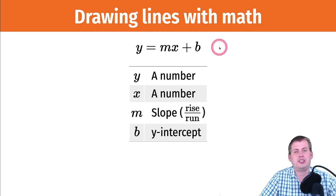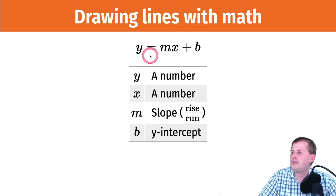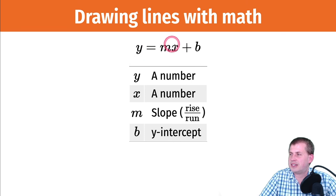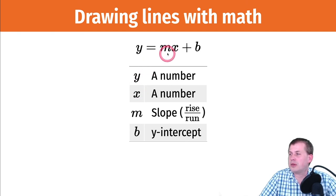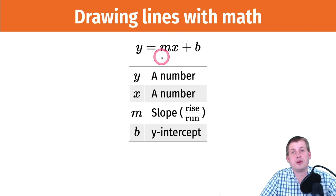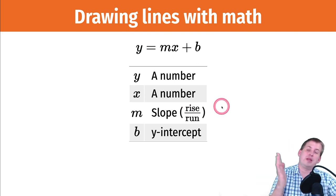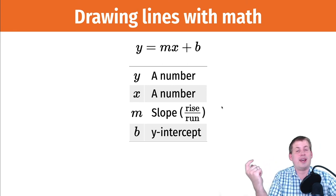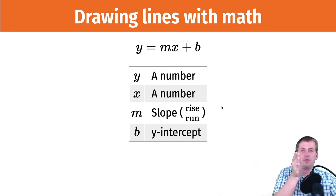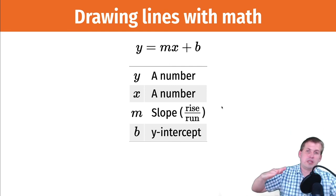In the y = mx + b formula, each letter stands for something. Y represents some number, x represents some number, but what's really important is m and b. The m is the slope of the line, which is rise over run. If the slope is one-half, you go up one over two, then up one over two — that's your line.